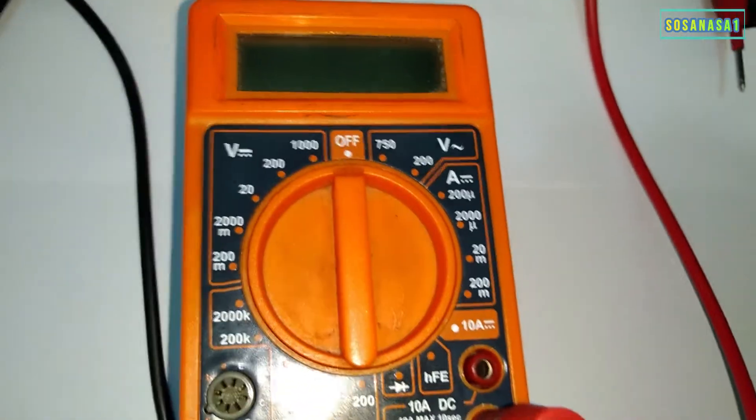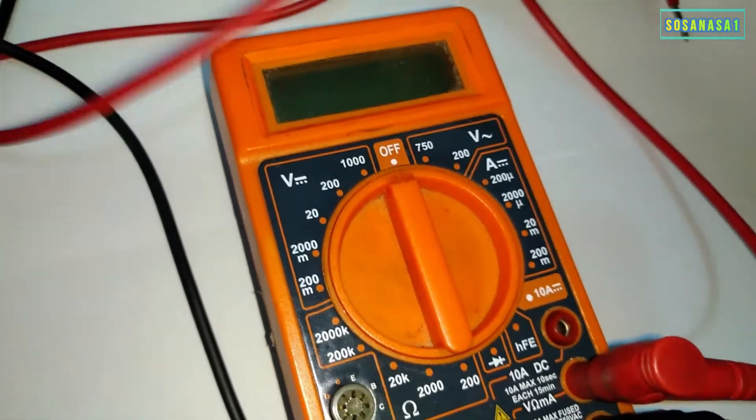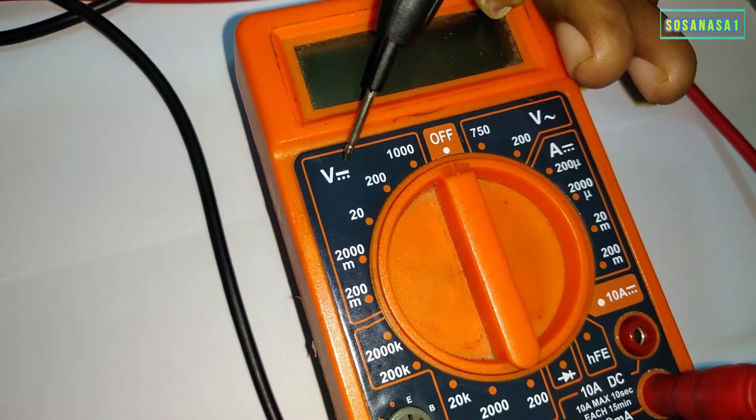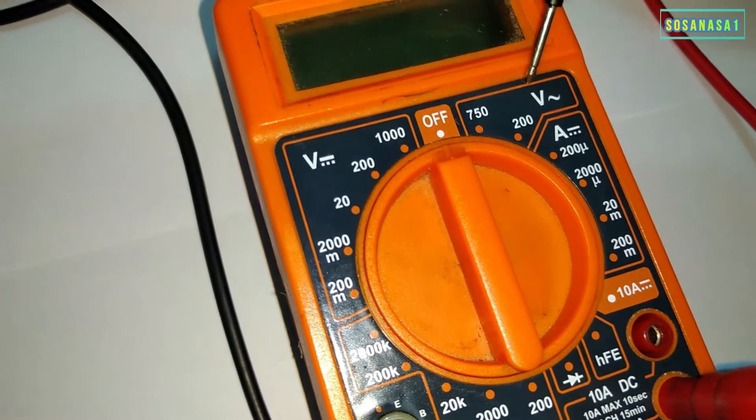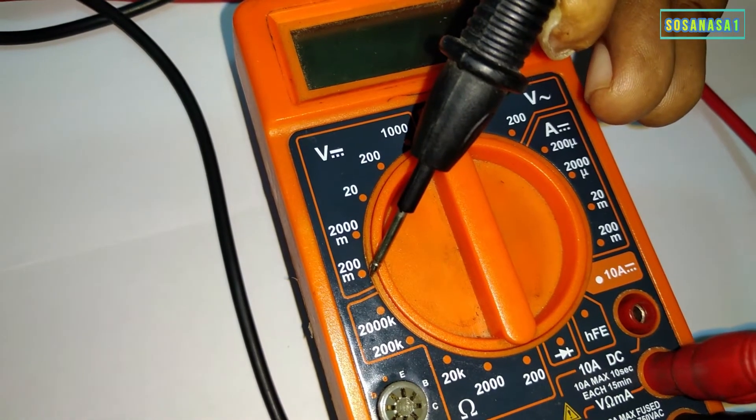The important thing is the voltage. If we see, this is direct voltage and this is alternating voltage. These are the ranges of the numbers.